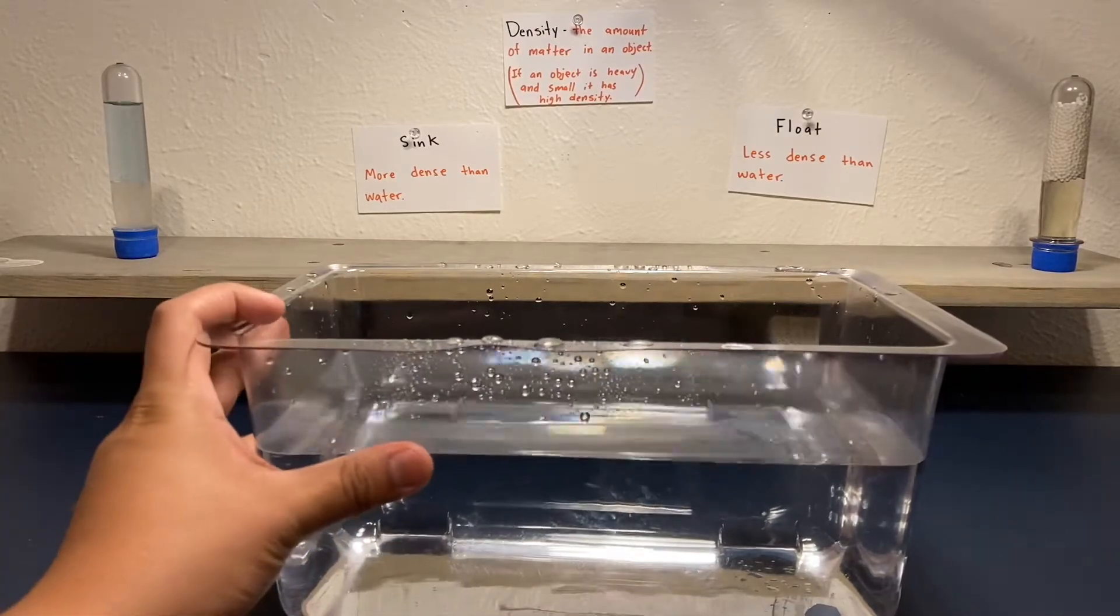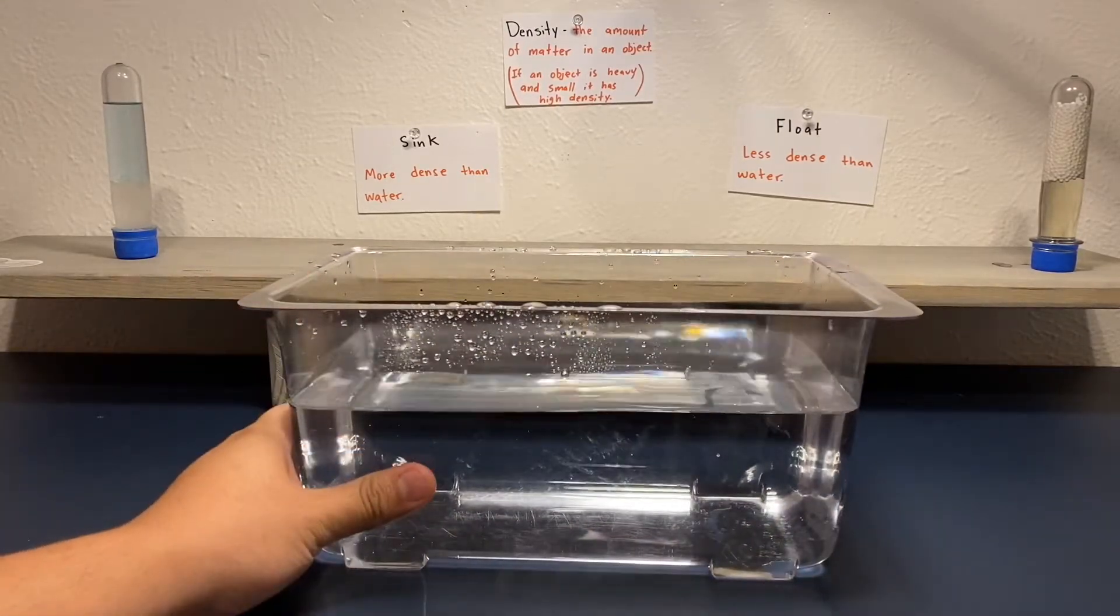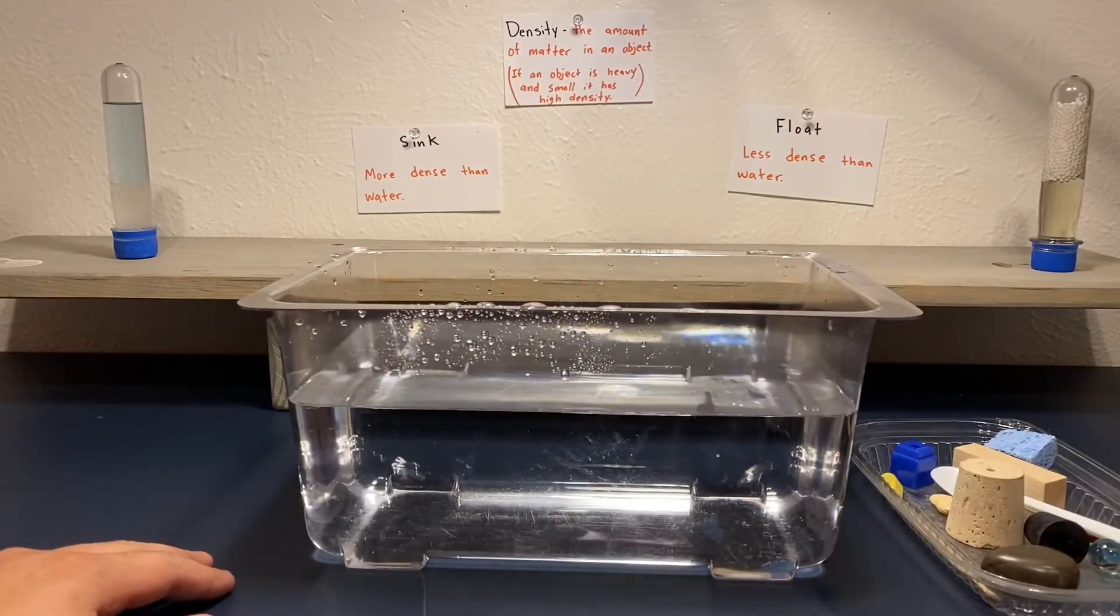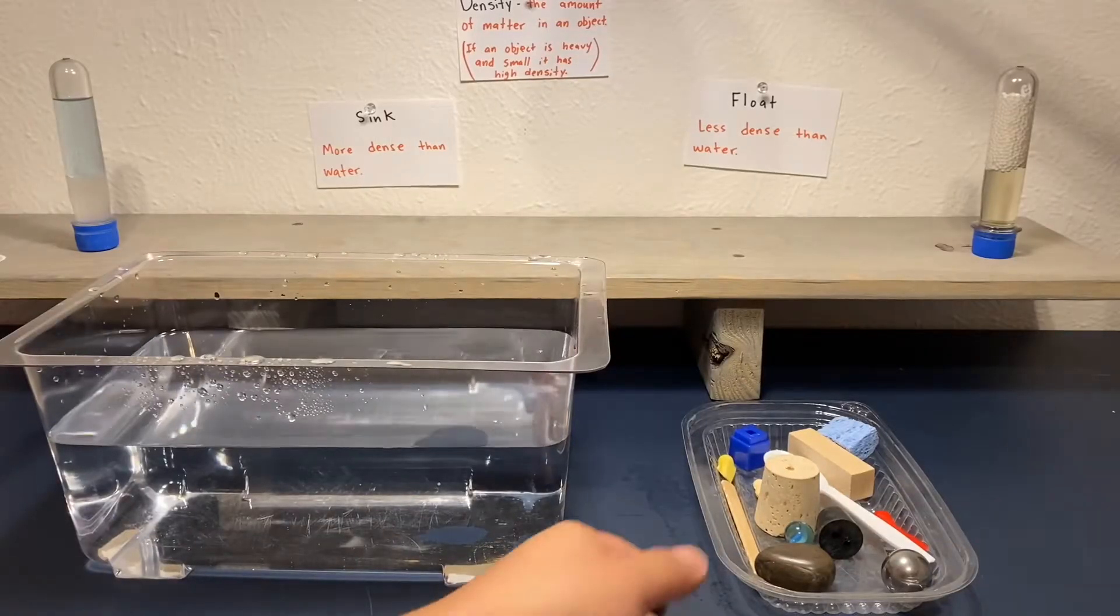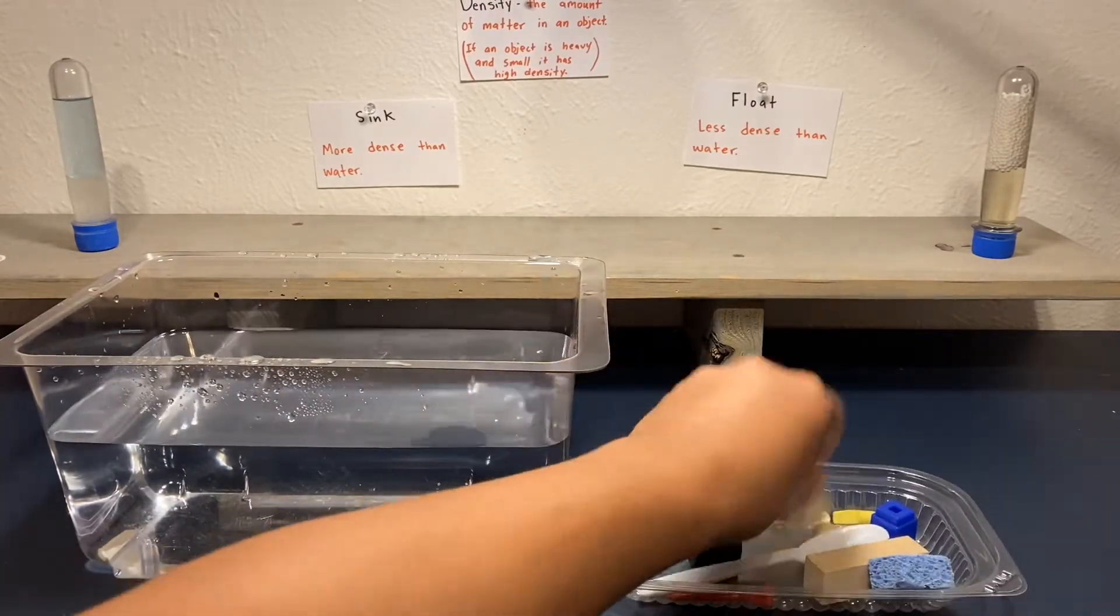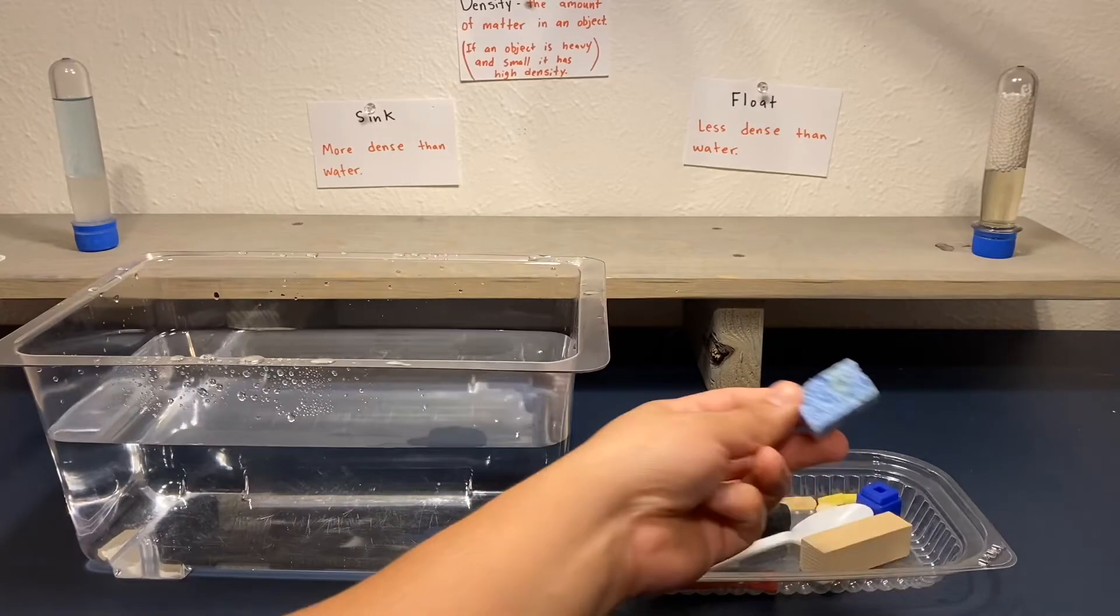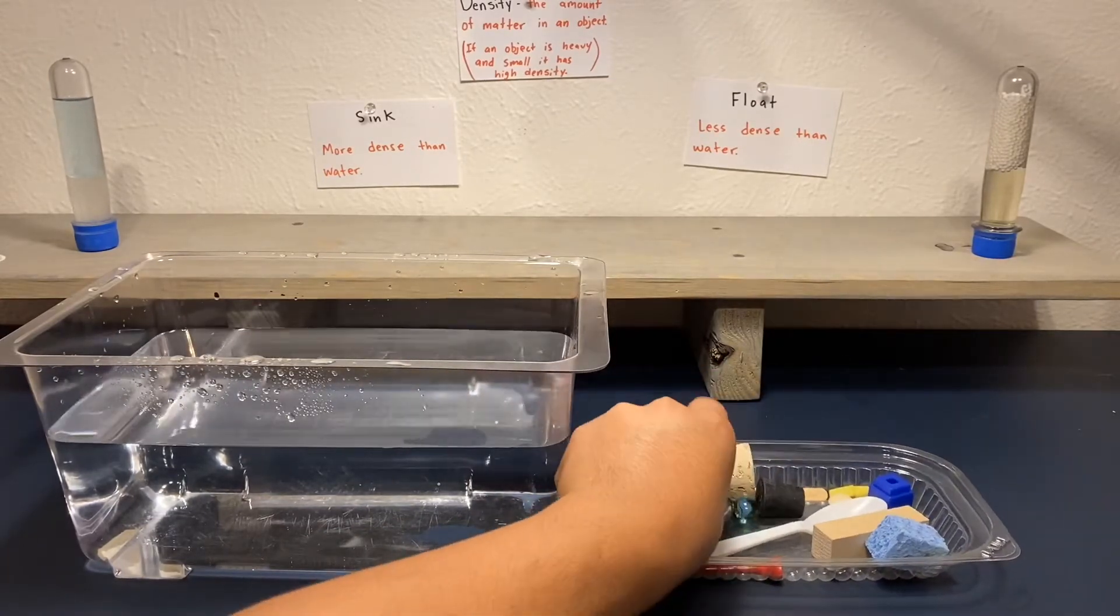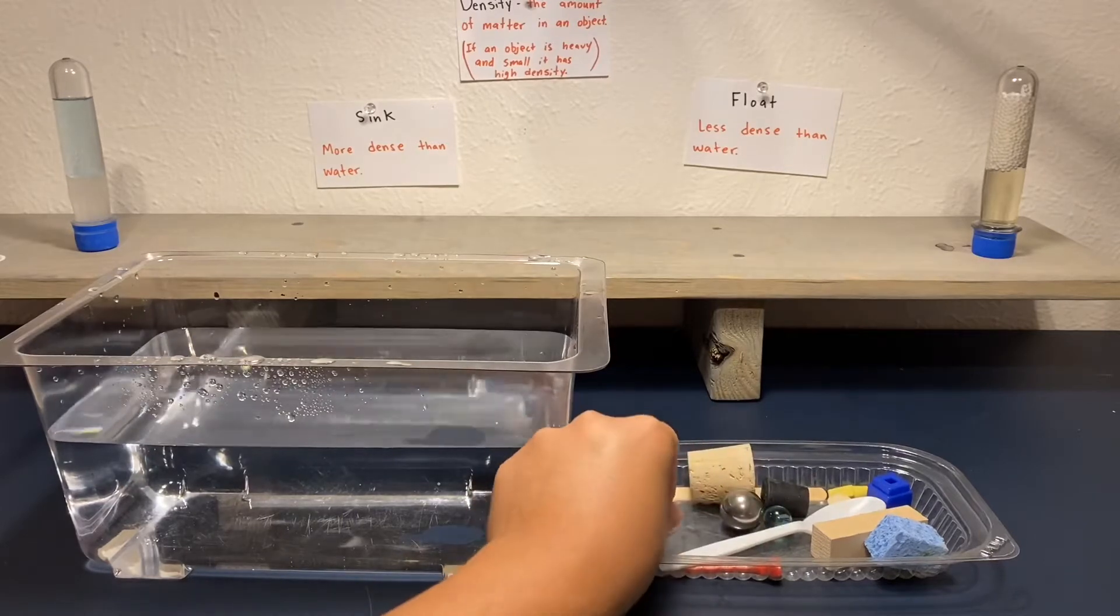In today's video we're going to be using water for our experiment. We have our objects right there. So we have different objects here: a cord, some rubber, sponge, wood, plastic, metal, and a rock as well. These are going to be the objects that we're going to be using.